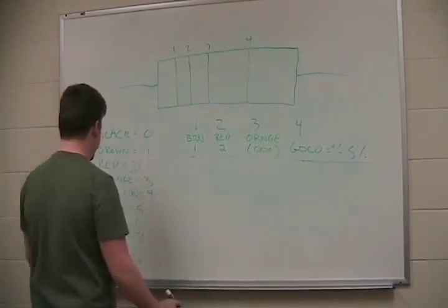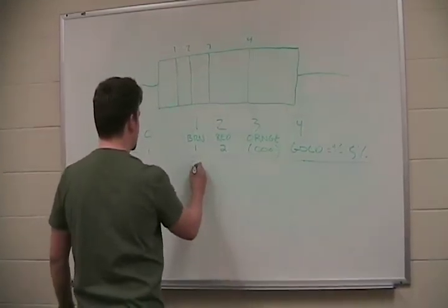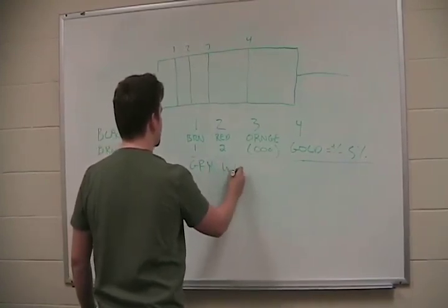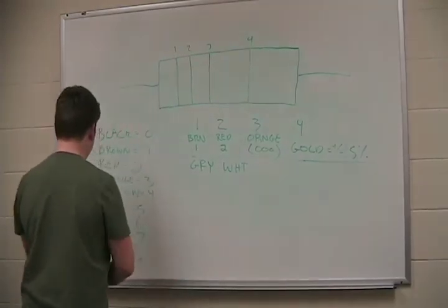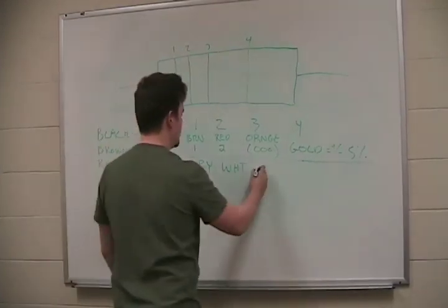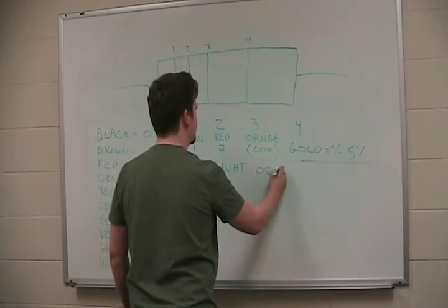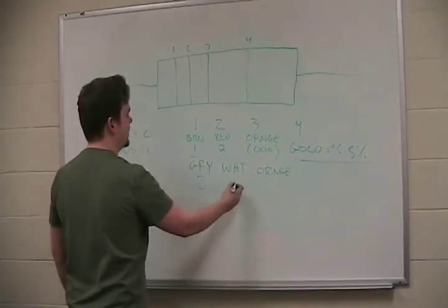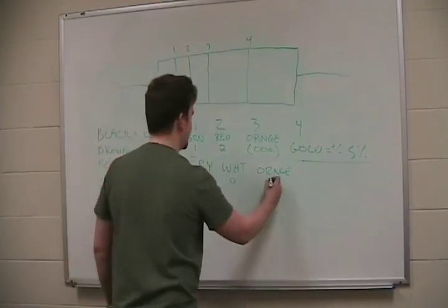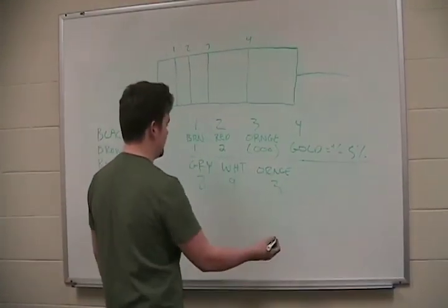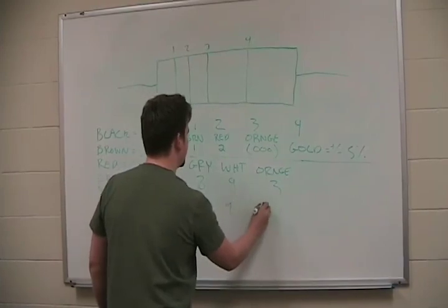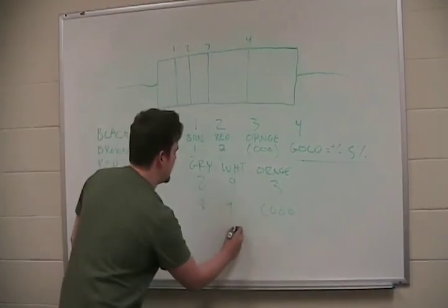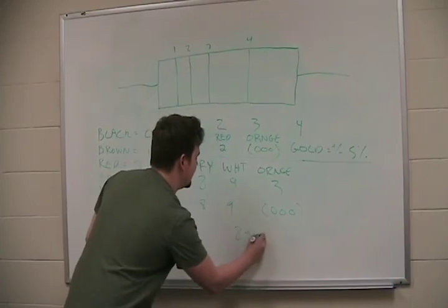Easy is 1, 2, 3. So, let's try gray, white, and orange. So, gray 8, white 9, orange 3. So, what does that mean? 8, 9, 1, 0, 2, 0, 3, 0. 89 K ohms.